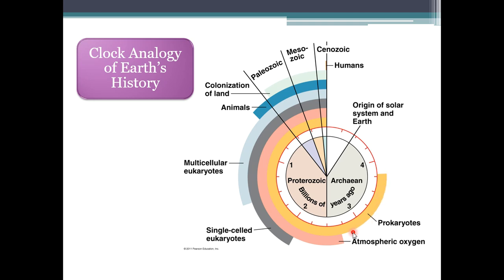A long time after prokaryotes evolved, we finally start to see atmospheric oxygen — we finally have O2 in a decent supply in the atmosphere. And that's actually caused by the prokaryotes, because we start to get prokaryotes that produce oxygen through stuff like photosynthesis. And then way over here, we have single-celled eukaryotes finally evolving. Single-celled eukaryotes were around for a long time before finally something happened — through random chance and natural selection — so that we have multicellular organisms occurring right here. Those have been around for a long time, but not as long as single-celled eukaryotes or prokaryotes.